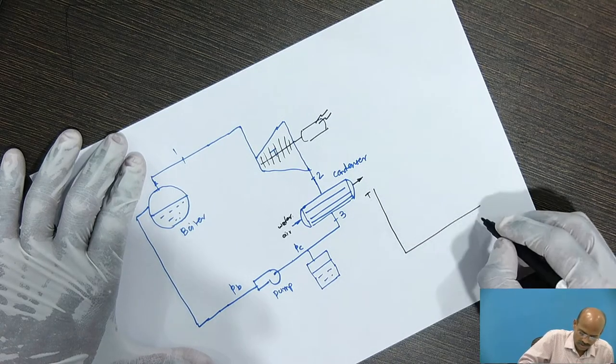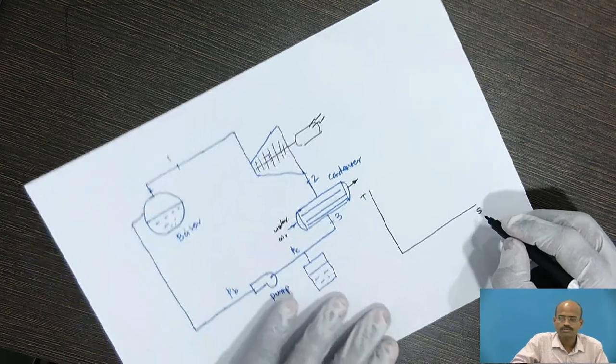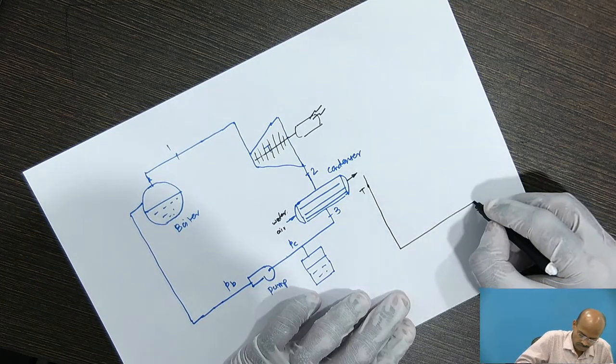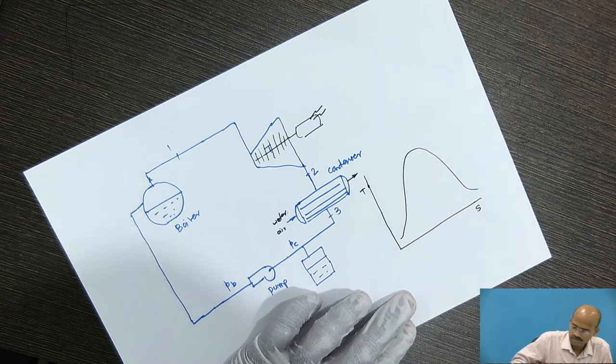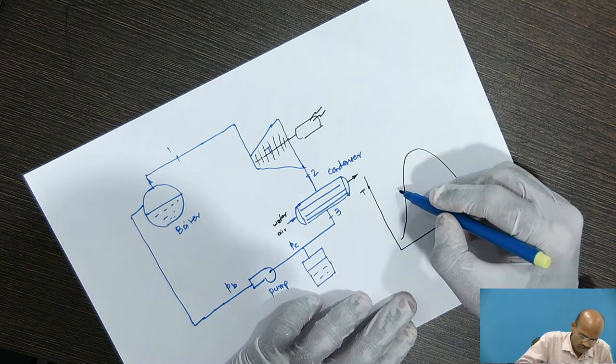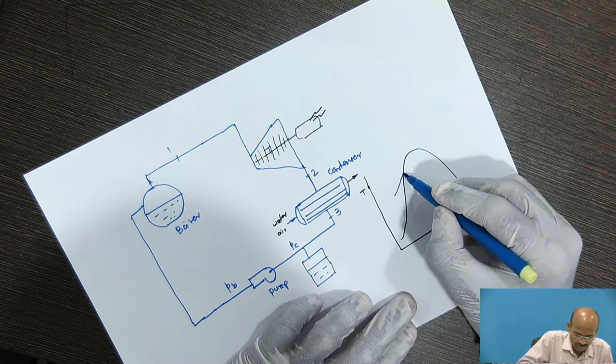So, this is temperature entropy plot. In previous sessions, we have studied the T-s plot. This is the saturation curve. Now, what I will do? I will show here the two isobaric lines first of all.